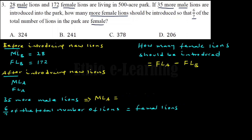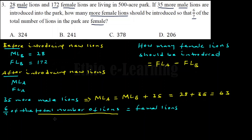Male lines before introducing new lines equals male lines before introducing new lines. 6 over 7 of the total number of lines is equal to female lines after introducing new lines. So the total number of lines after introducing new lines equals male lines after introducing new lines plus female lines after introducing new lines. 6 over 7 of that total equals the number of female lines after introducing new lines.